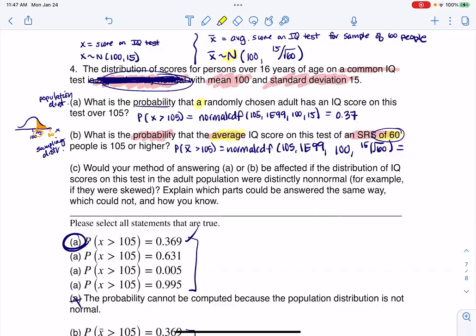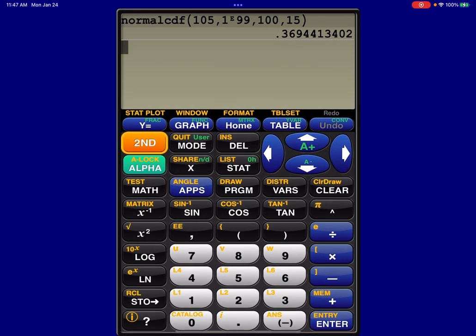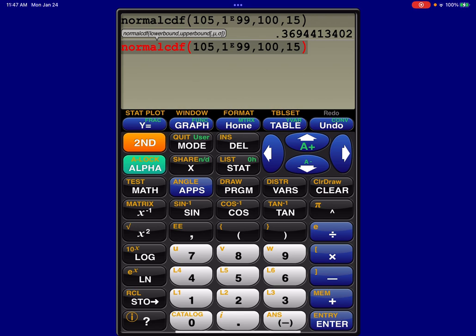And again, I'm going to use this app. And I'm just going to take this and make it 15 divided by the square root of 60. And let me move out of there, close that parentheses. And what is our probability this time? It looks like it's about 0.005.